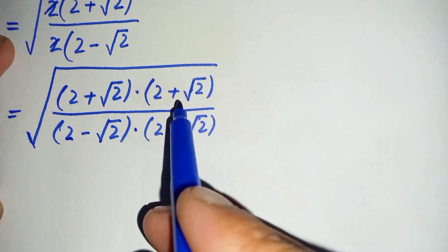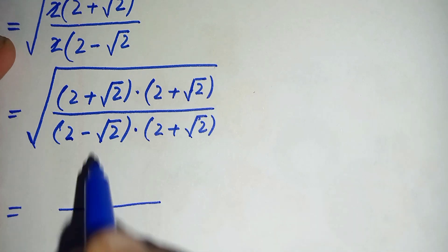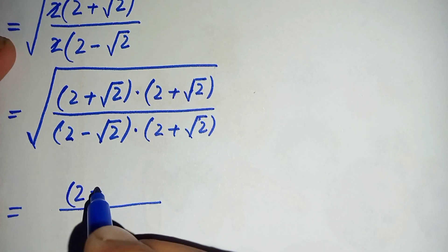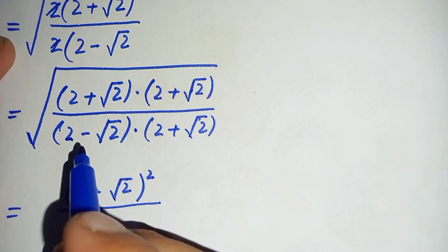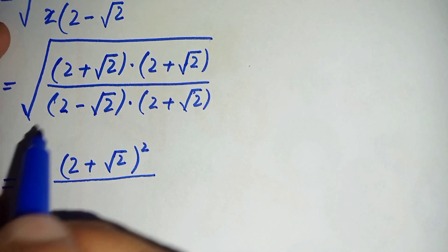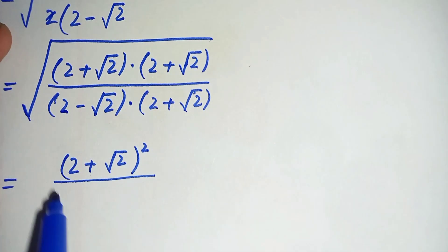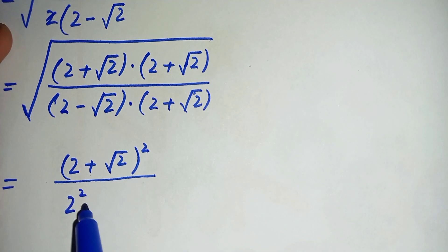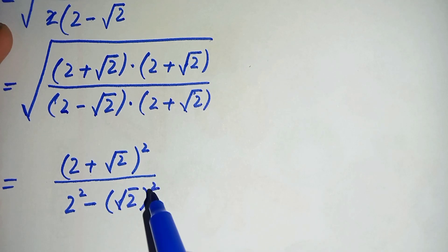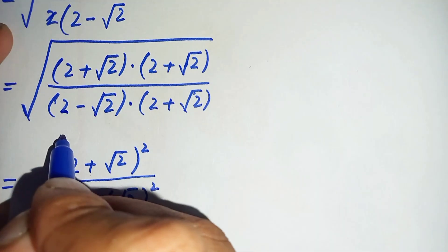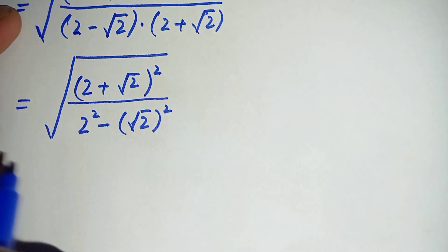Since 2 plus square root of 2 is multiplied twice in the numerator, we write it as a square: (2 plus square root of 2) squared. In the denominator, we apply the algebraic identity (a minus b)(a plus b) = a squared minus b squared, where a is 2 and b is square root of 2.